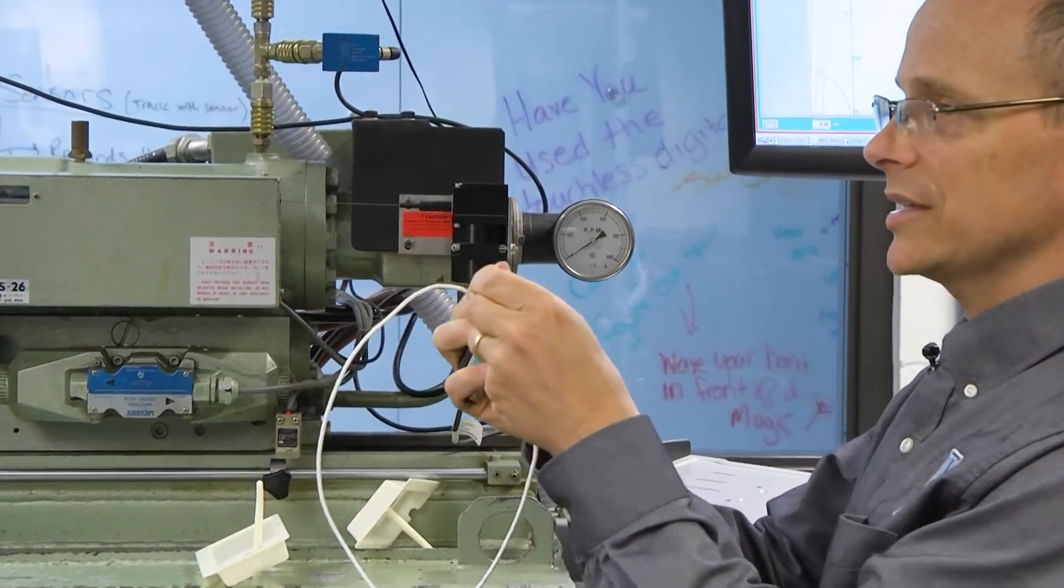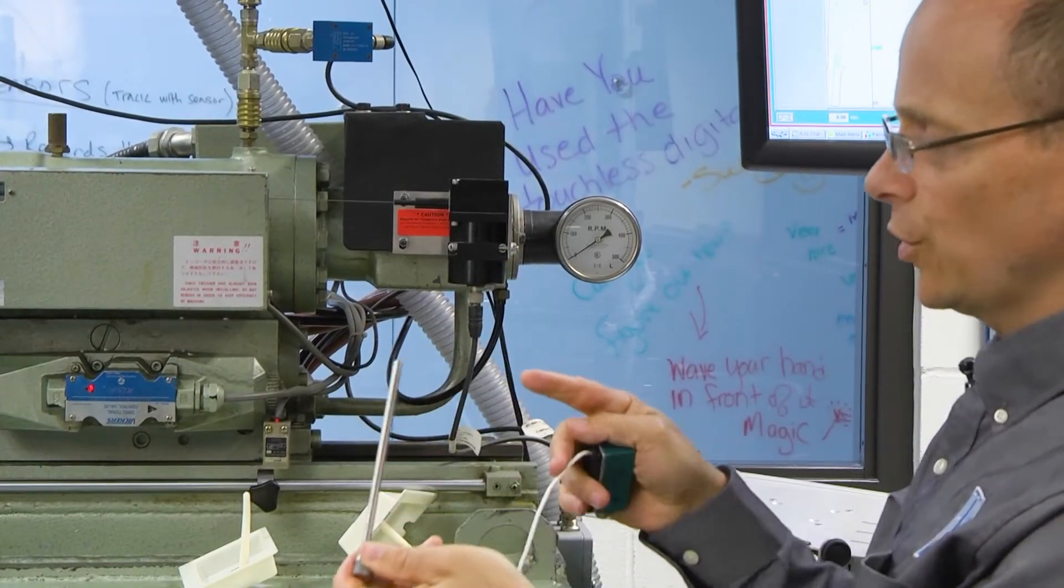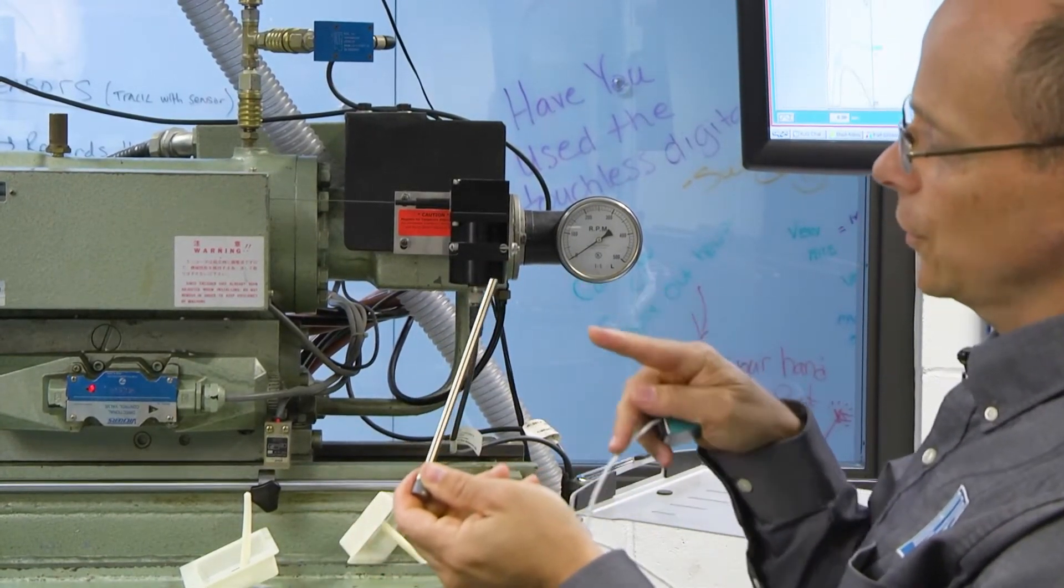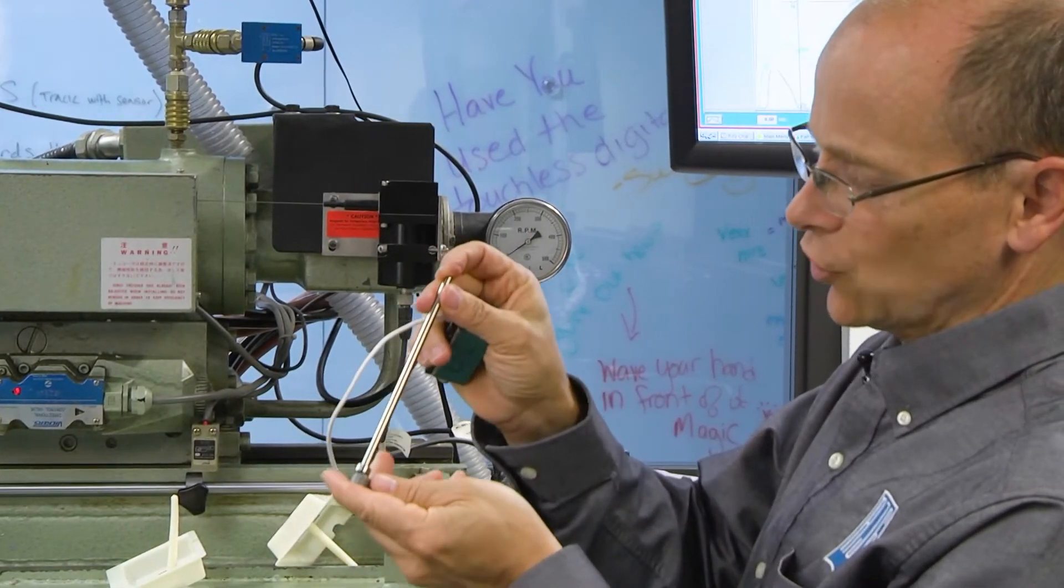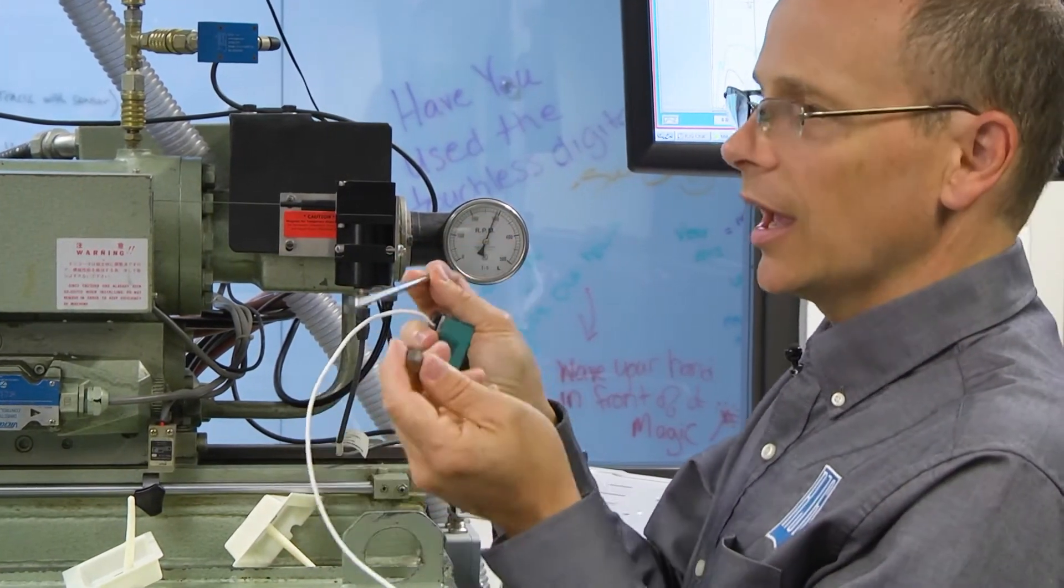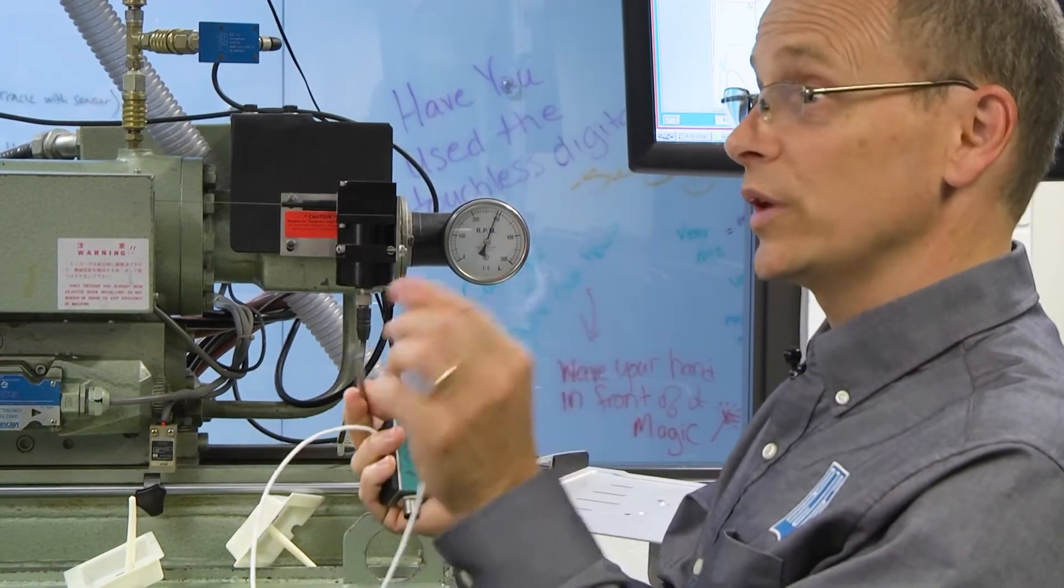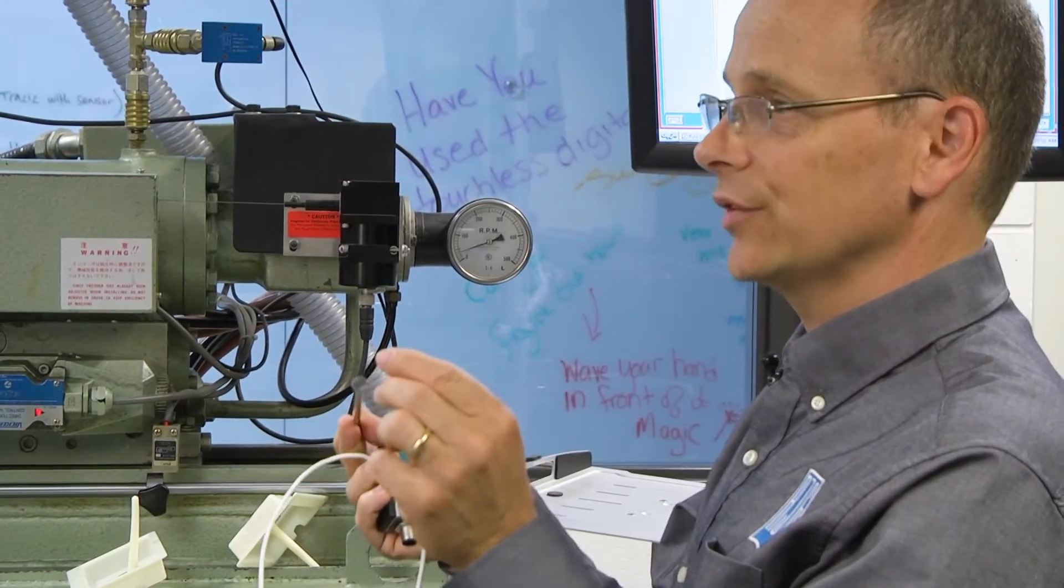The ejector pin is located here on the part and the sensor is located behind the ejector pin. As the plastic flows into the mold, it flows over the ejector pin, pushes on the ejector pin, transmits that load to the sensor, and this way we're able to read the pressure inside the cavity.